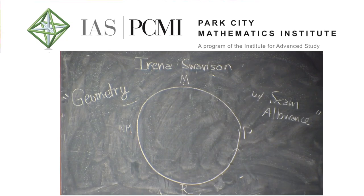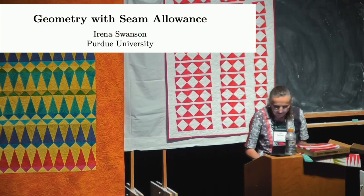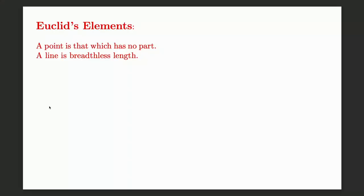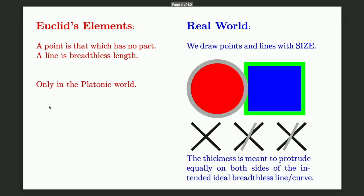I'll talk to you about the geometry of seam allowance. We've all had training from Euclid: a point is that which has no part, and a line is breadthless length. But that's only true in the Platonic world. The way we draw points and lines, there is always some size to them. When we draw a circle, there's some boundary to it — I drew my boundaries in an exaggerated way.